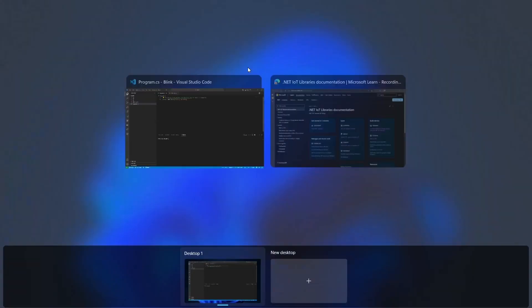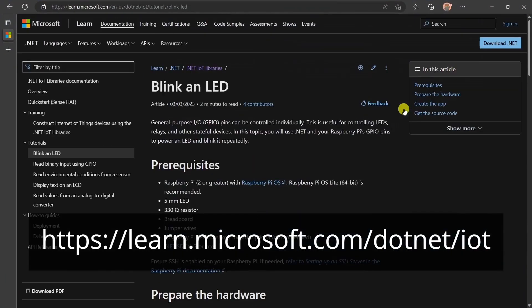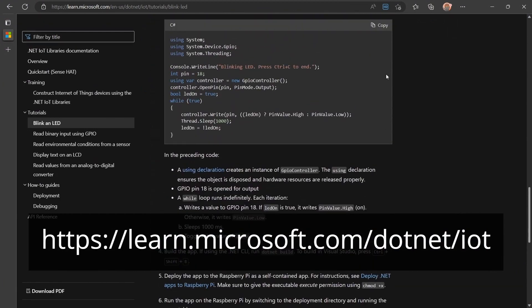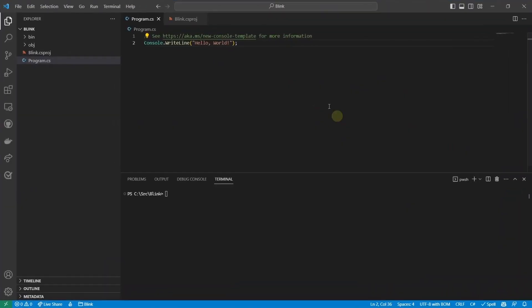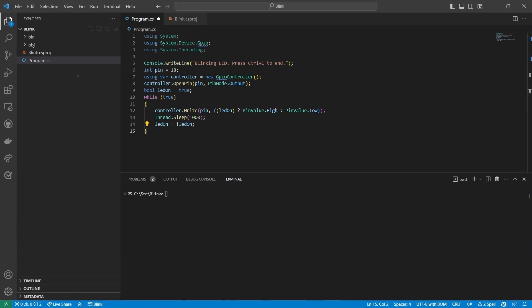Now I'll write my code. To speed things up, I'll get the code from the Blink an LED tutorial in the .NET IoT docs and paste it into my program.cs. Let's review it.